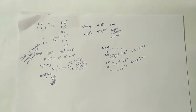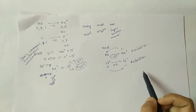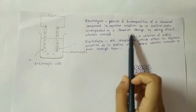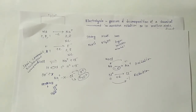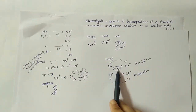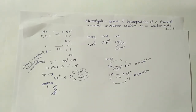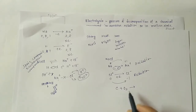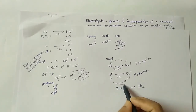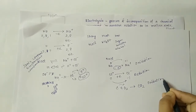Oxidation and reduction can be defined in different ways. Oxidation is the process in which an atom or ion loses electrons. It also involves the addition of oxygen or removal of hydrogen. For example, when carbon is burned in the presence of oxygen, it produces CO2 - there is addition of oxygen, so this is oxidation.